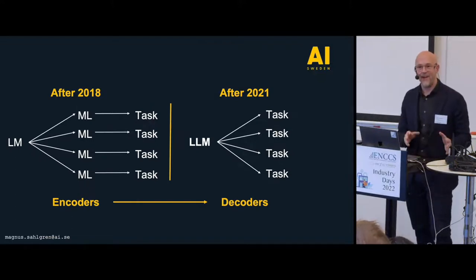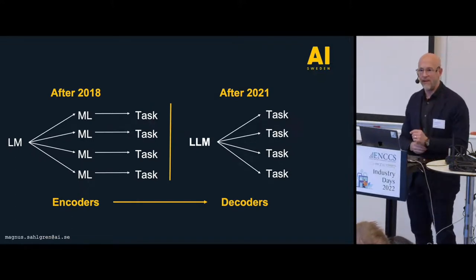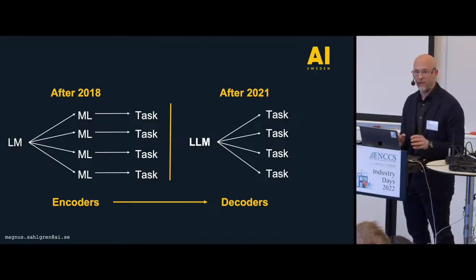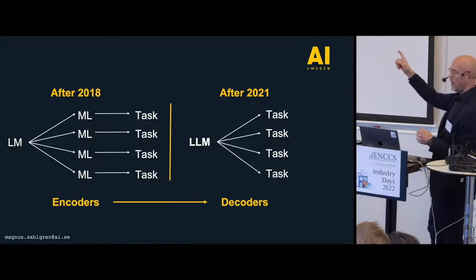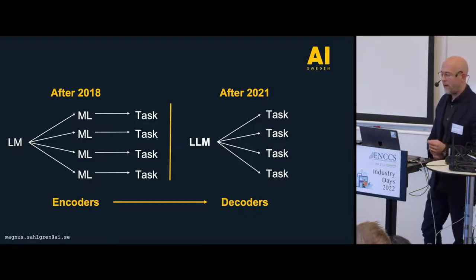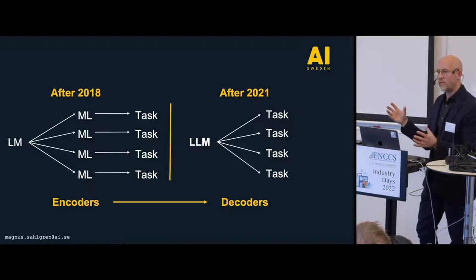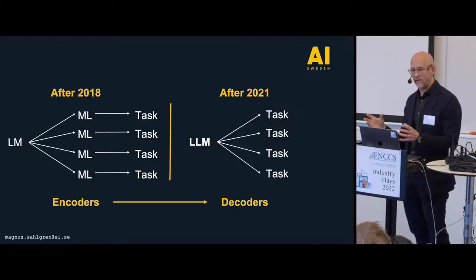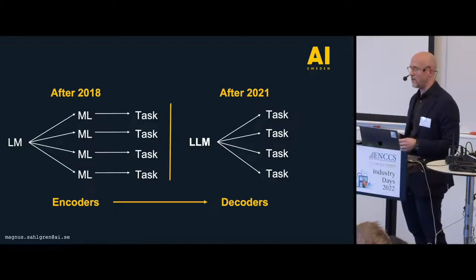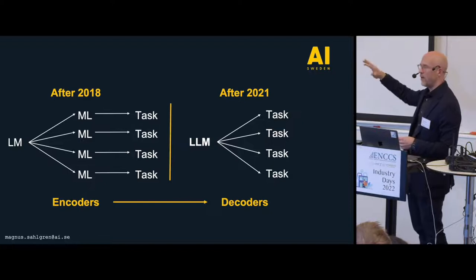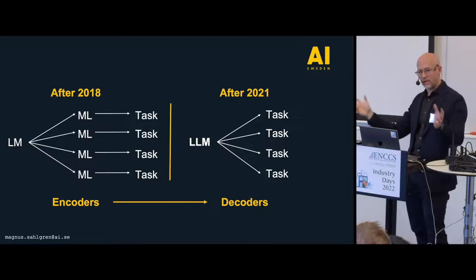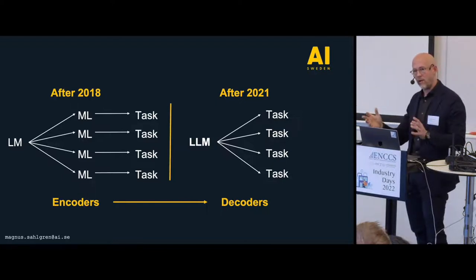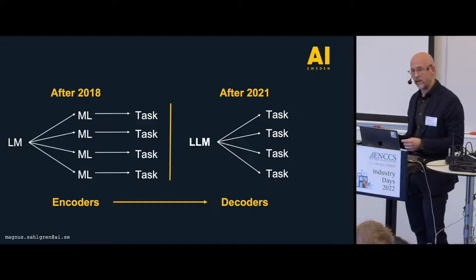Then something else happened. In the summer of 2020, something called GPT-3 came out — what we nowadays call an LLM, a large language model. Not only was it huge, it was also a slightly different type than the models we used back in 2018. So there is a shift around 2020–2021 where we go from mid-sized language models to really large-scale language models, also changing training objectives — going from encoder-type models to decoder-type models like GPT.